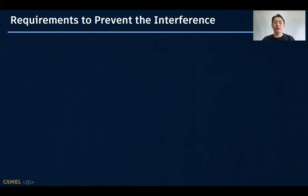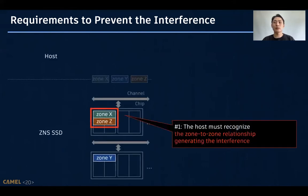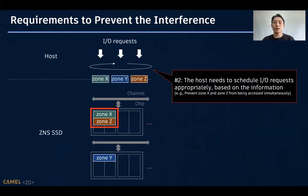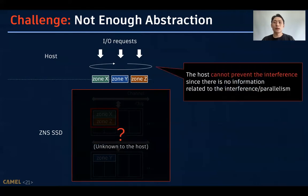Then, what should we do to prevent the interference? To prevent it, the host must recognize the relationship between zones generating the interference. Then, based on this information, the host needs to schedule requests appropriately. However, there is a big problem. ZNS does not provide enough abstraction about hardware configuration. Therefore, the host cannot prevent the interference, as there is no information related to the interference or parallelism.